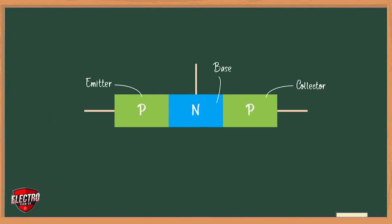The base, emitter, and collector are provided with terminals which are labeled as E, B, and C. The two junctions are emitter-base junction and collector-base junction.